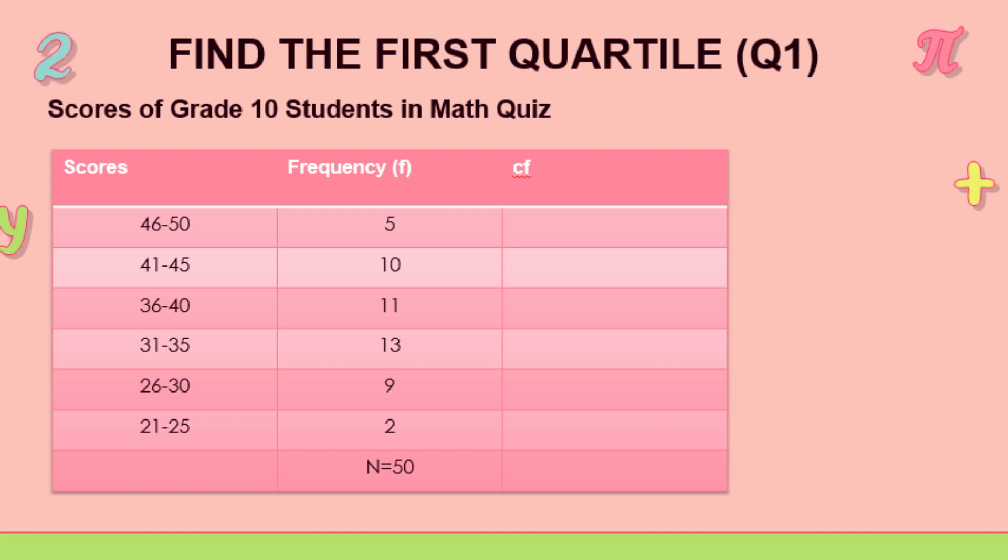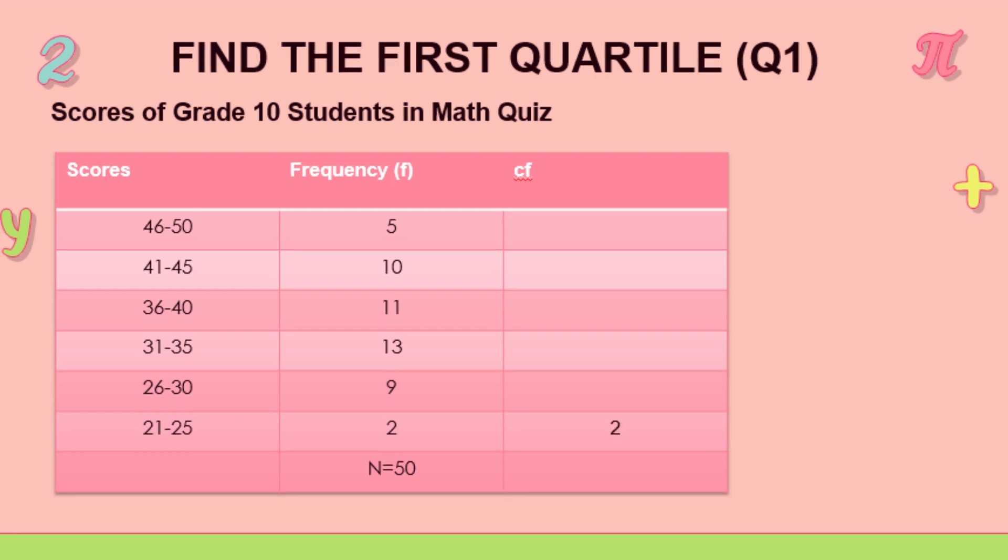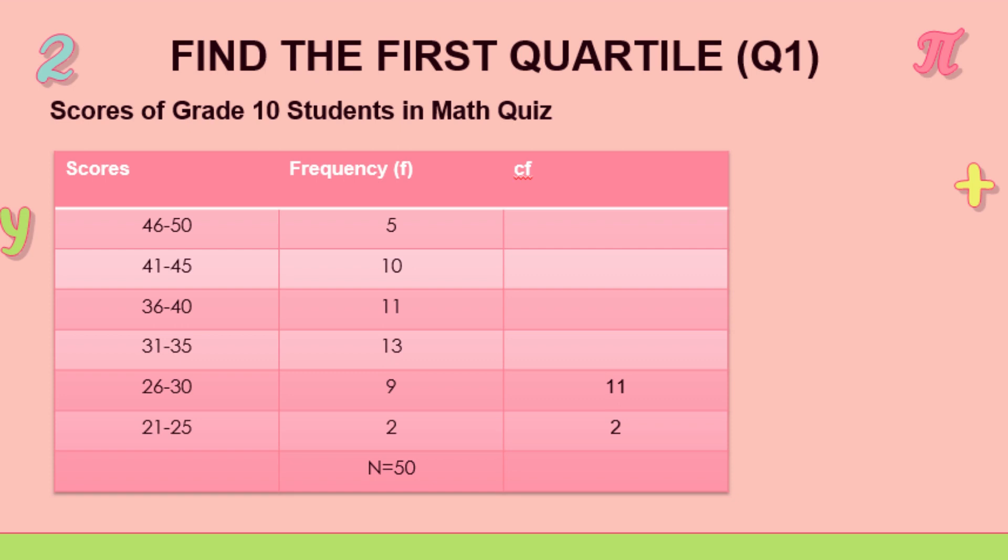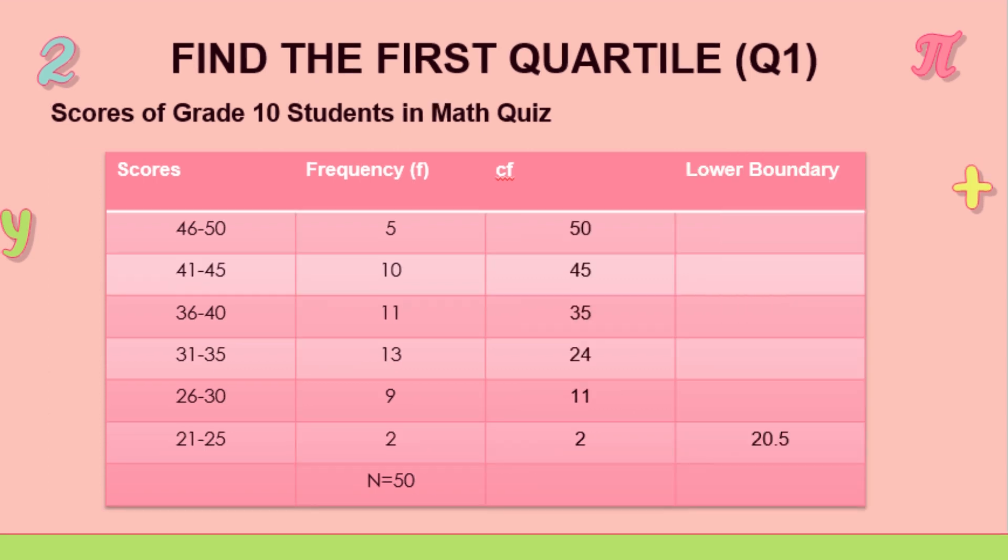So for the cumulative frequency, we start from the 21 to 25. We're just going to copy the frequency, which is 2. And to get it, we're just going to add the next frequency, which is 9. So 9 plus 2 is 11, and so on there.